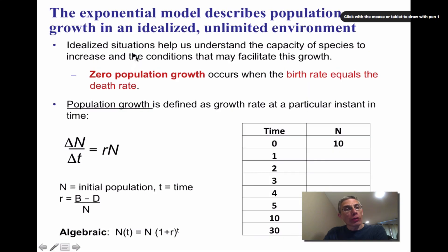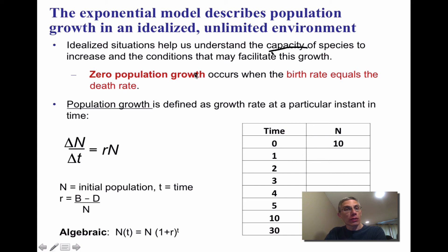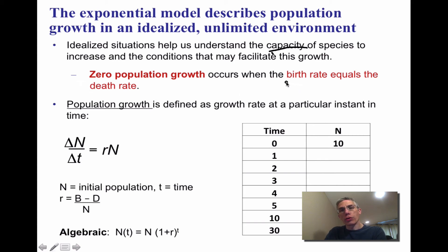Returning to the two growth models — logistic and exponential — these models help us understand a species' capacity to increase and the conditions that encourage such growth. Zero population growth occurs only when the birth rate equals the death rate within a population.